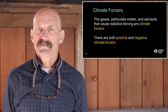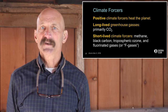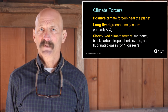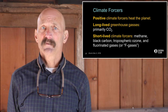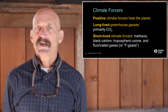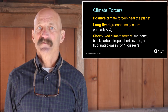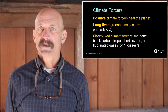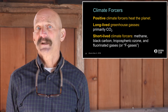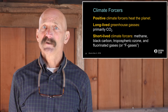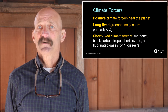Most of our climate pollutants are positive climate forcers that heat the planet. They include long-lived greenhouse gases like carbon dioxide, which can remain in the atmosphere up to a thousand years, and so-called short-lived climate forcers, which typically last for days to decades. They include methane, black carbon, tropospheric ozone, and fluorinated gases — or F-gases — most of which are far more effective at trapping heat than CO2 on a ton-for-ton basis.